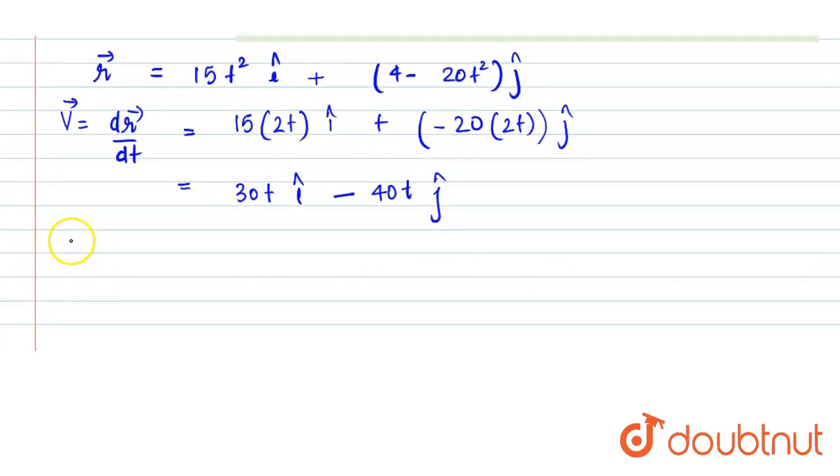Now we have to find the a vector, acceleration vector, which is defined as the rate of change of the velocity vector. That will become d by dt of 30 t, differentiation of t is 1, so that would be 30 i cap minus, differentiation of t is again 1, so that is minus 40 j cap. Now we can see that this a vector is constant. That means this does not change with time.